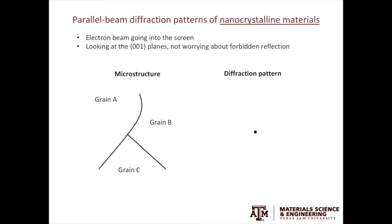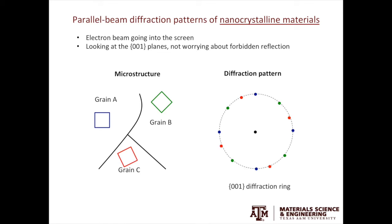Moving on to nanocrystalline materials: the diffraction pattern is simply the summation of the diffraction patterns of individual grains in the area of interest. In a supersimplified example, assume all grains have the same 001 out-of-plane orientation but different in-plane orientations. Each grain — A, B, and C — produces its own diffraction pattern, but because they share the same 001 interplanar spacing, the distance from the direct beam to the diffracted spots is the same, so they lie on a circle. With more grains, the circle becomes more and more complete.